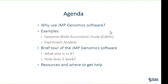Our agenda today is to talk about why you would use JMP Genomics software and what situations would make that useful. Then we'll look at two examples in some detail: a genome-wide association study for genetic data and an expression analysis for microarray expression data. I'll also allude to a few other resources on predictive modeling for plant breeding and for the expression analysis example, which uses breast cancer data.